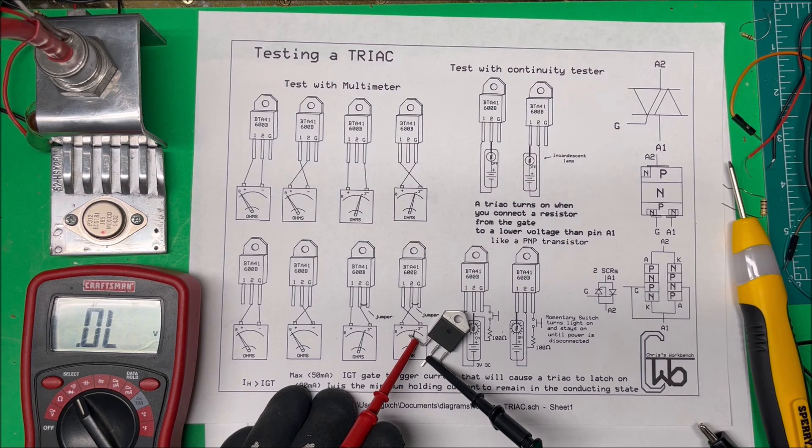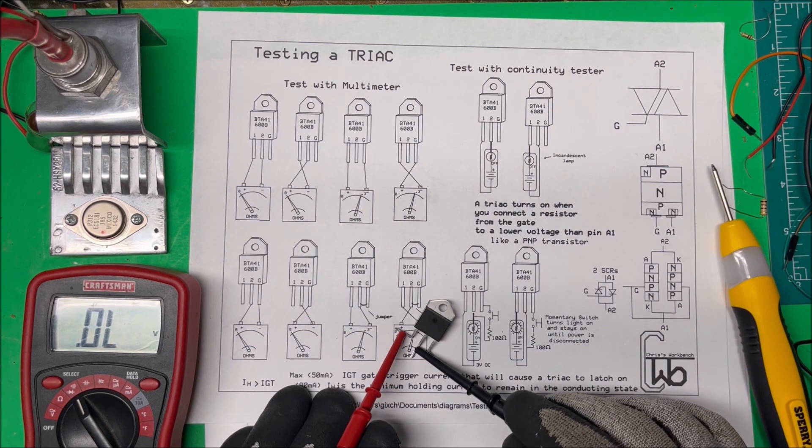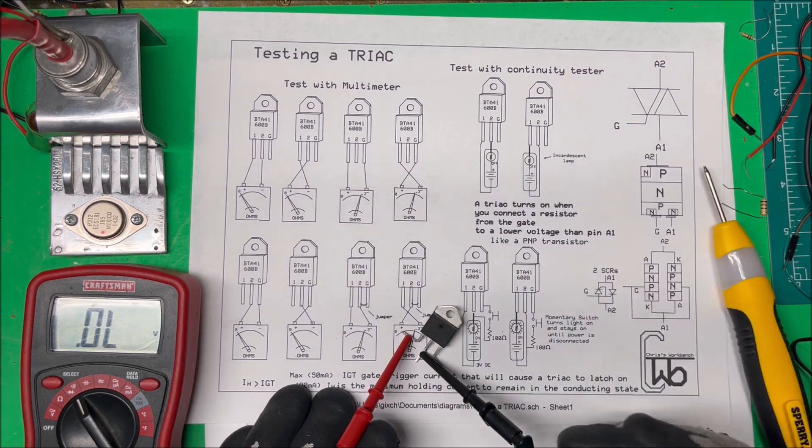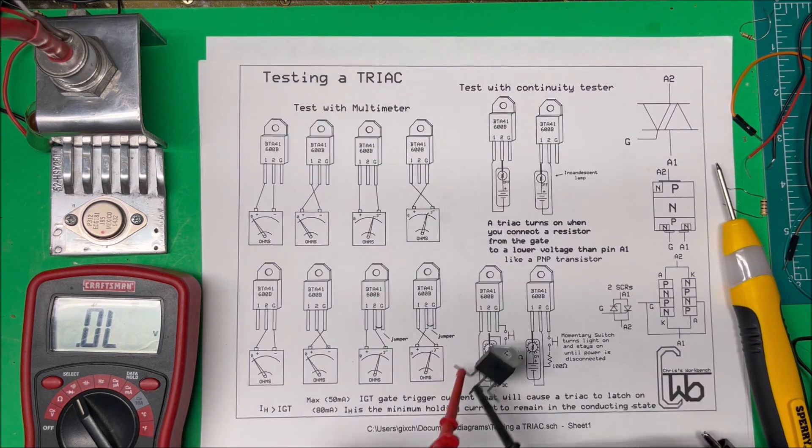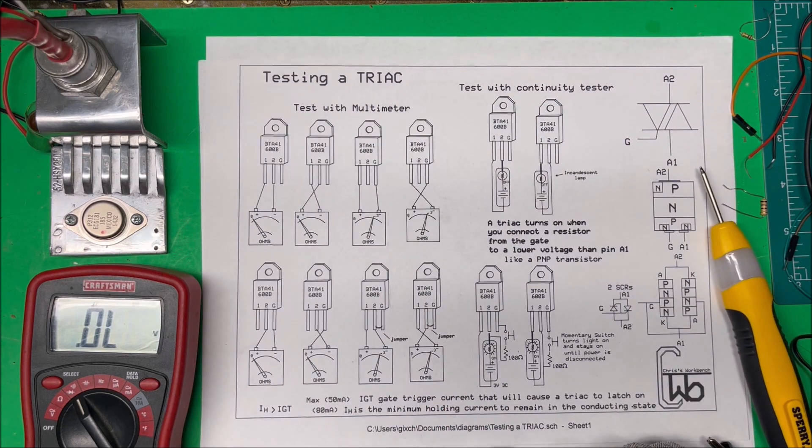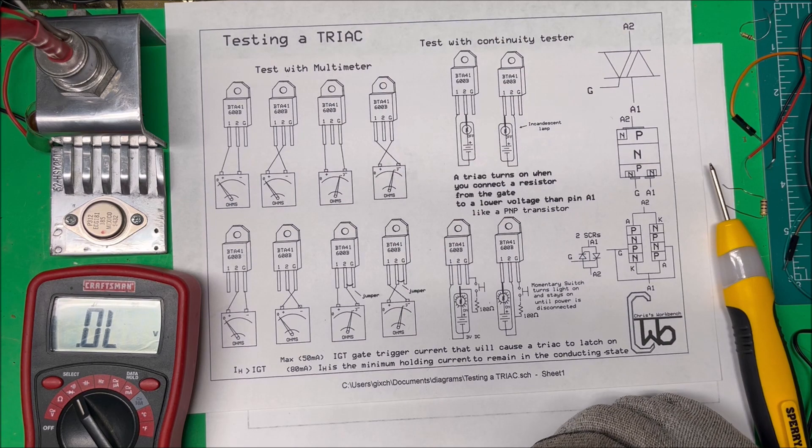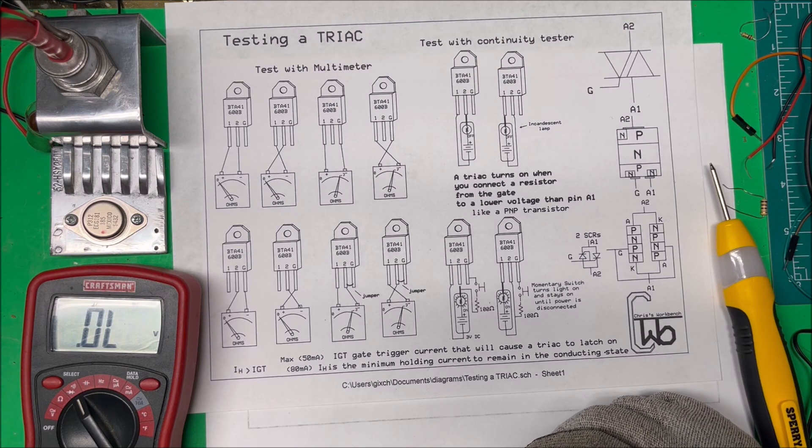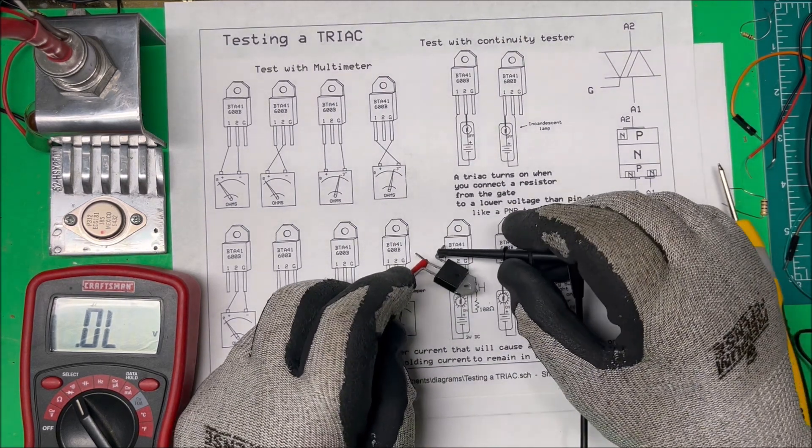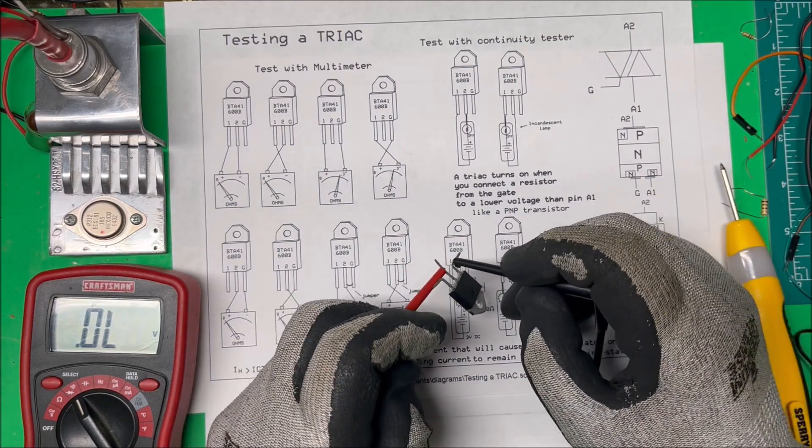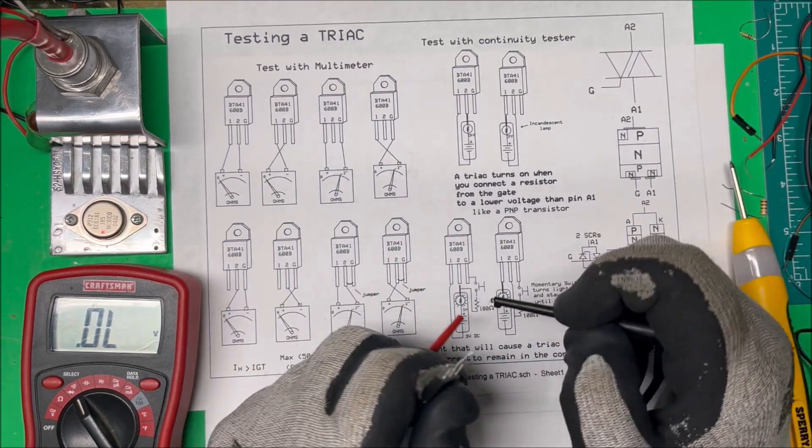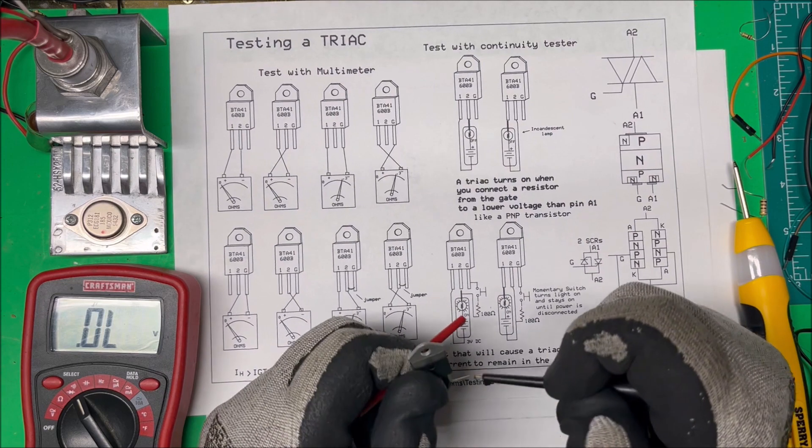If we go between pin 1 and pin 2, we get nothing. And then if we reverse that, still nothing. And then we go from pin 1 to the gate.